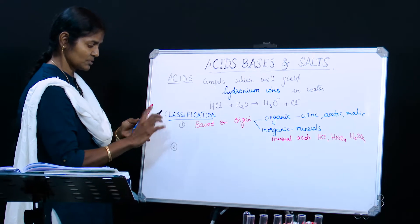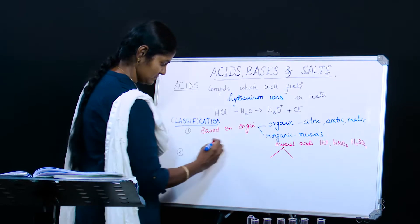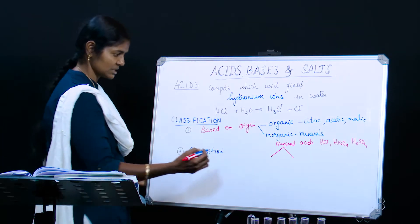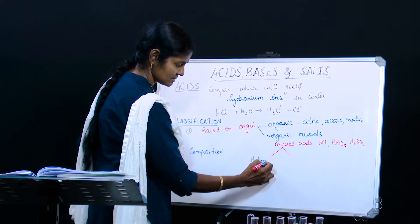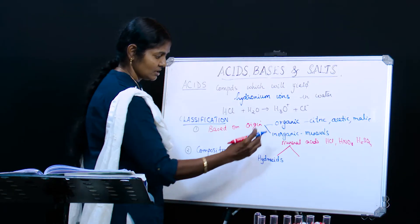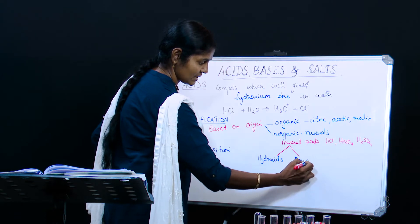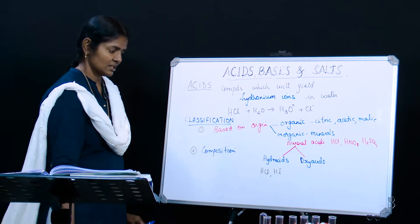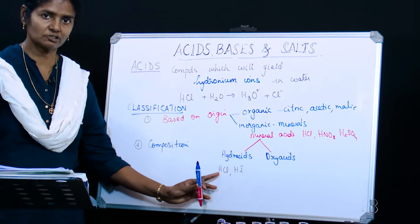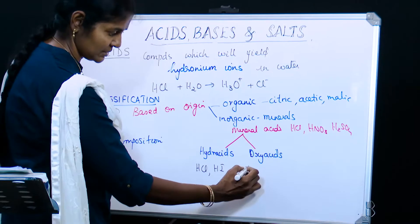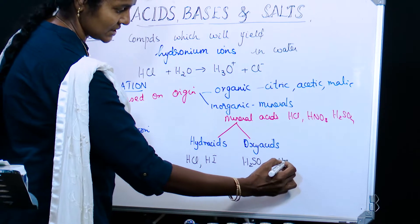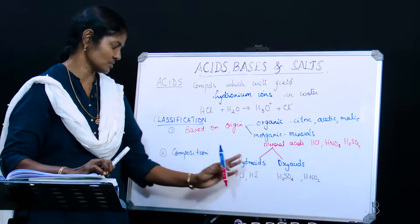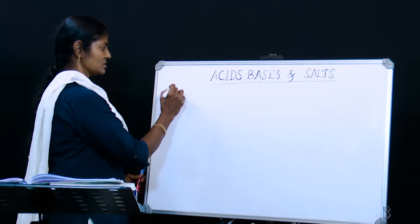The next classification is based on composition. When it comes to mineral acids, you can divide them based on composition. Some acids contain only hydrogen and another non-metallic element — these are called hydro acids. Others contain hydrogen, a non-metallic element, and also oxygen — these are called oxy acids. Examples of hydro acids are hydrochloric acid and hydroiodic acid. Examples of oxy acids are sulfuric acid and nitric acid, which contain hydrogen, a non-metallic element, and oxygen.